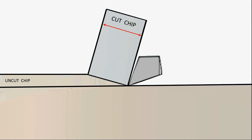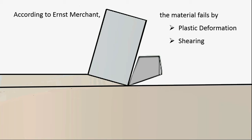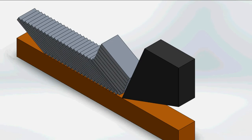It is generally found that the thickness of the chip is greater than that of the uncut chip. According to Ernst Merchant, the material fails by plastic deformation followed by shearing along this plane.